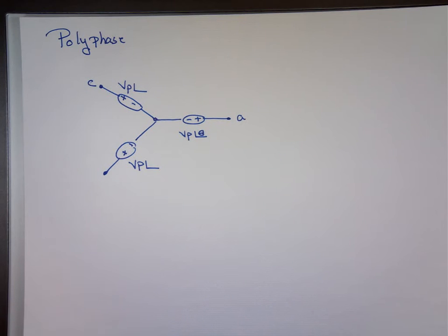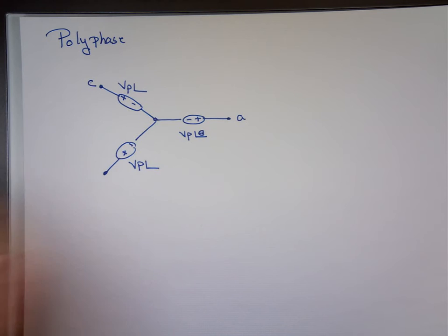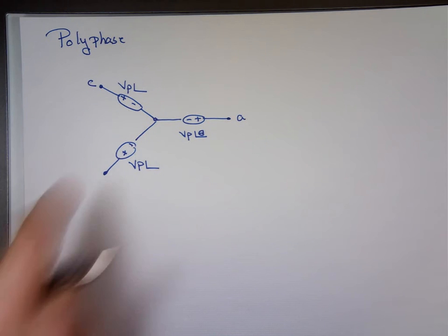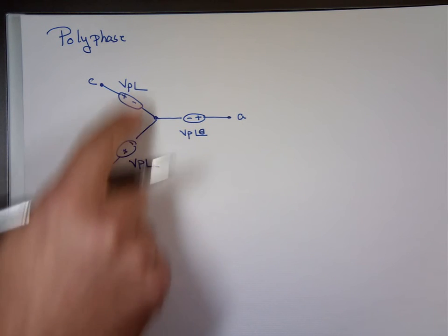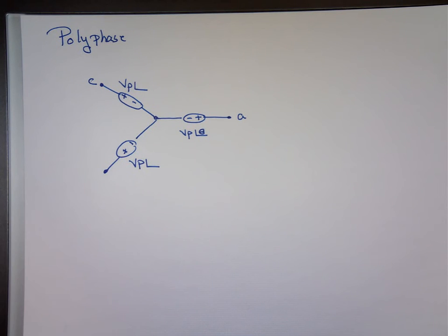As we said last time, in the U.S. we use a three-phase system. That's why it's called polyphase — you have more than one phase. We use a three-phase system because it's more economical. Economical advantages, that's why.